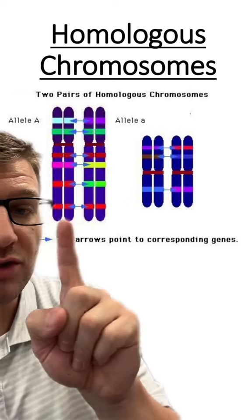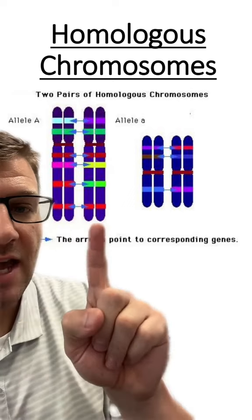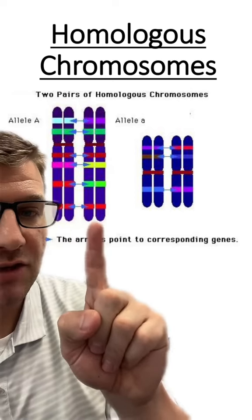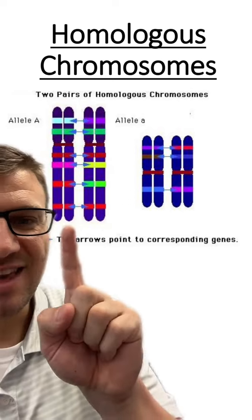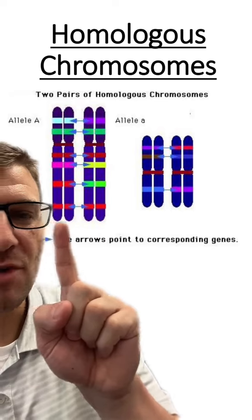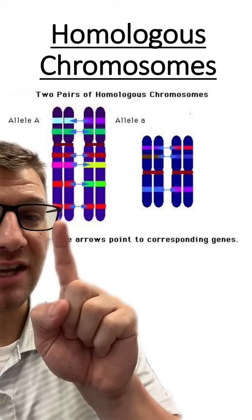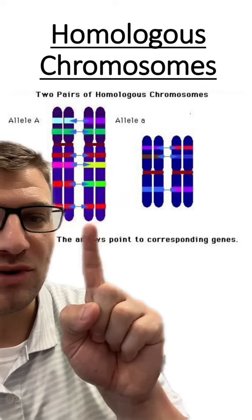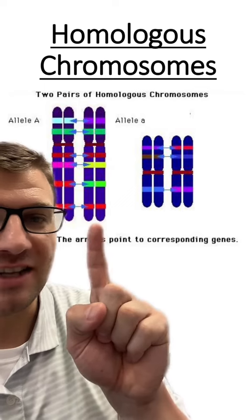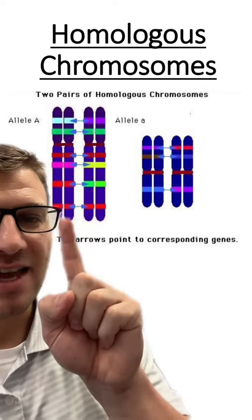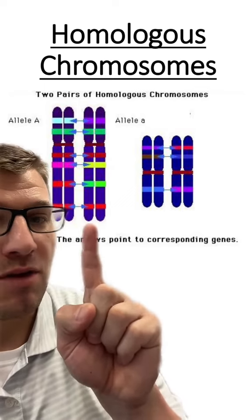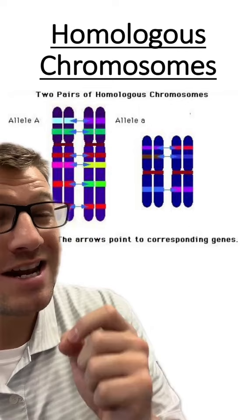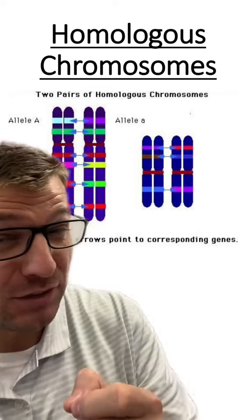For this chromosome there are two sister chromatids, and for this chromosome there are also two sister chromatids. These two chromatids are genetically identical, and these two chromatids are genetically identical. These two chromosomes are homologous, but they're not genetically identical.